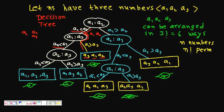But what happens if a1 is less than a2 and a1 is less than a3? This means a1 is less than both a2 and a3, but I don't know the relation between a2 and a3. So I have to decide again by comparing a2 and a3. If a2 is less than a3, the sorted sequence is a1, a2, a3. If a2 is greater than a3, then a2 is the highest, giving a1, a3, a2.